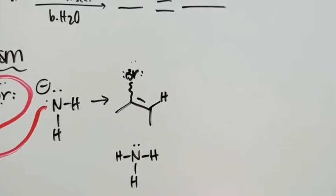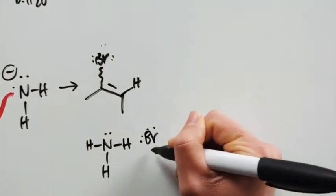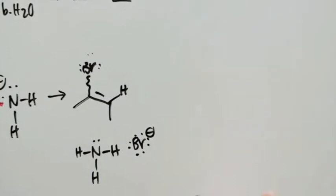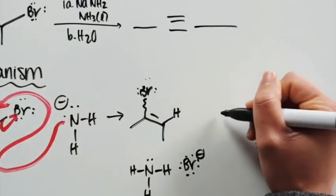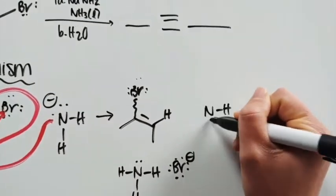Alright, so now we have our NH3 and remember we also need to draw out our leaving group too because that left as well. Now we can continue with the reaction. So we're going to have NH2 minus come in once again.